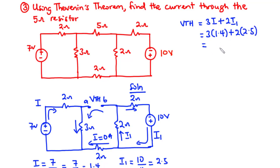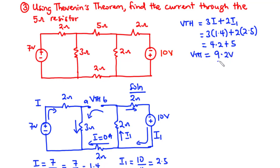So we have 3 times I, which is 1.4, plus 2 times I1, which is 2.5. 3 times 1.4 is 4.2; 2 times 2.5 is 5. Therefore Vth equals 9.2 volts.